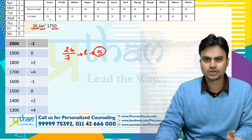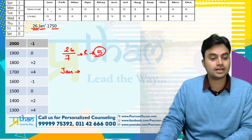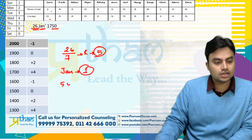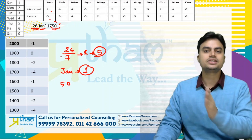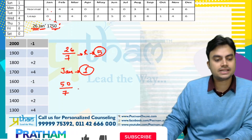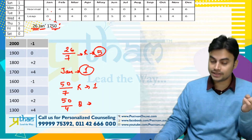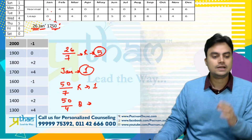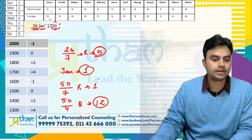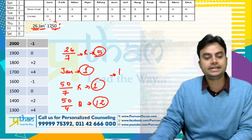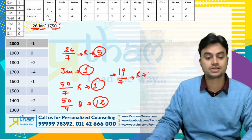Yahan kaun sa year hai? 1750 — 50 leap year hota hai nahi, kyunki 4 se divide nahi hota. So it is an ordinary year, January ka code 1 hoga. Then comes 50 — kyunki 50th year chal raha hai. 50 divided by 7, remainder will be 1. Aur isi 50 ko phir se 4 se divide karenge for the quotient — quotient hai 12, kyunki 12 times 4 is 48. Ab in sab ko add karte hai: 5 plus 1 is 6, plus 1 is 7, plus 12 is 19. 19 divided by 7, remainder will be 5.